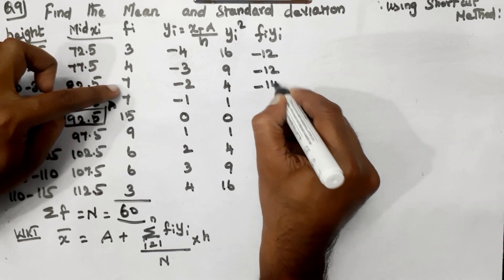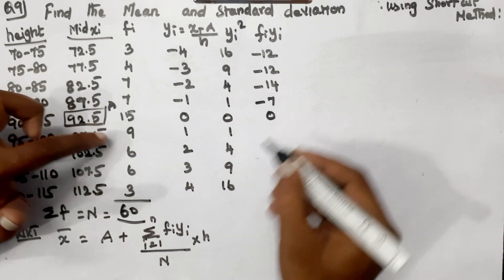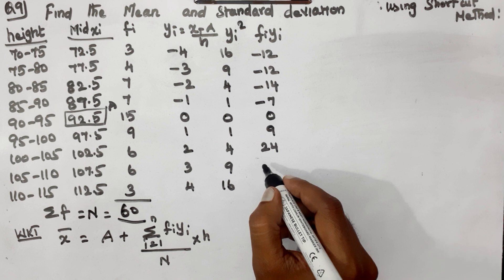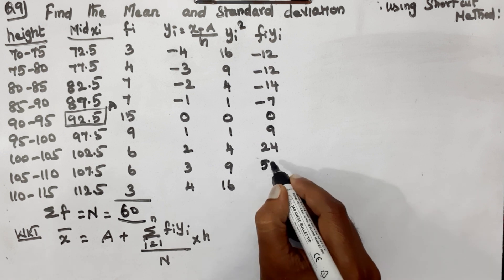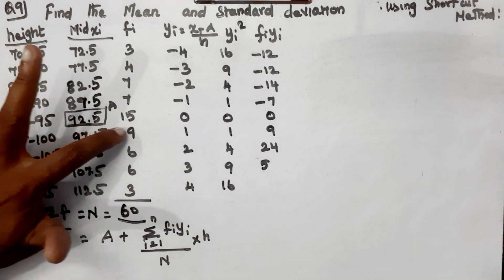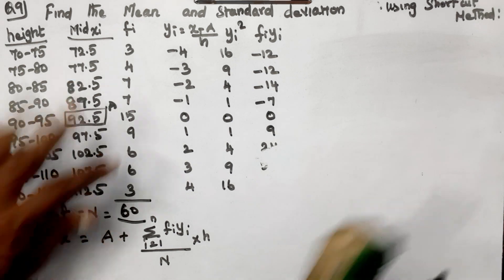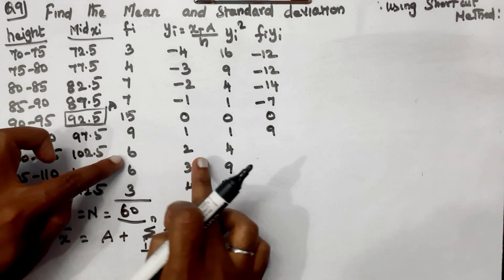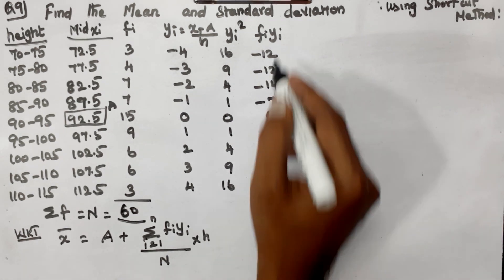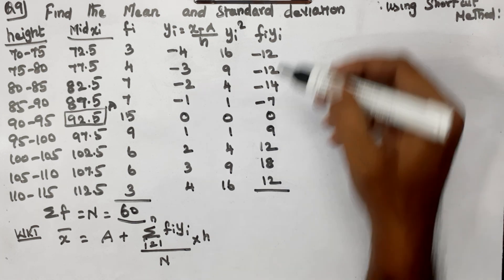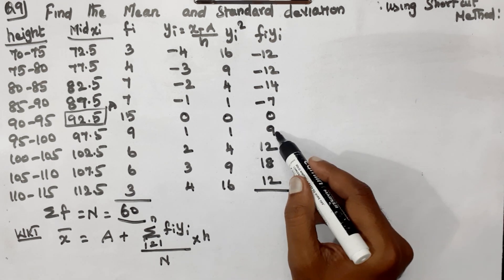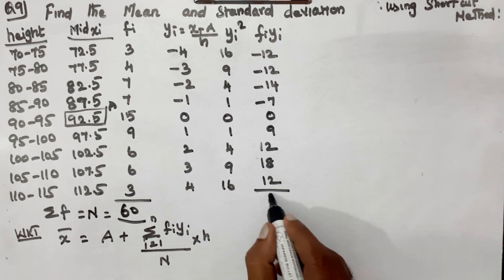The calculations proceed as follows: 7 times 1 equals 7. 15 times 0 is 0. 9 times 1 equals 9. 64 minus 24, 69 minus 54. Then: 6 times 2 equals 12, 6 times 3 equals 18, 3 times 4 equals 12. Total summation: 12, 12. Then 14 minus 21, 18, 9, 27, 27 and 6.